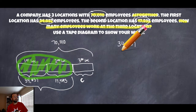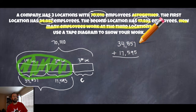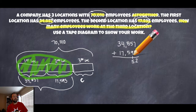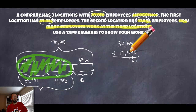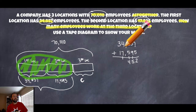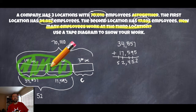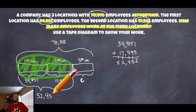So I have my two numbers — 34,857 and 17,595 — and I'm going to add them up. Starting from the right: 7 and 5 gives me 12, put down 2 and carry 1. Then 5 plus 9 plus 1 is 15, put down 5 and carry 1. Then 8 and 5 is 13 plus 1 is 14, put down 4 and carry 1. Then 4 plus 7 plus 1 is 12, carry 1. Then 3 plus 1 plus 1 is 5. So these two locations combined amount to 52,452 employees.